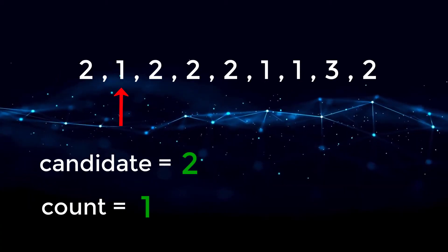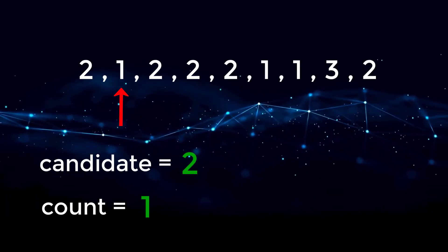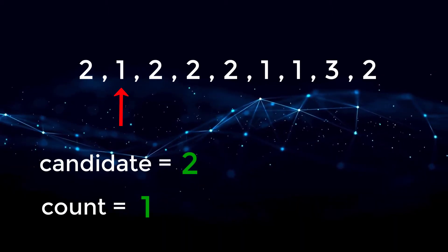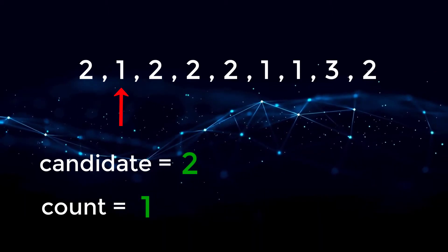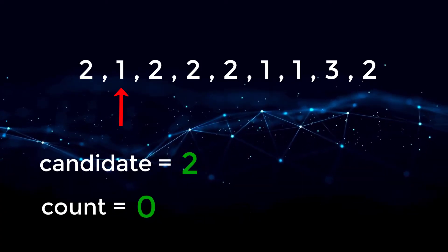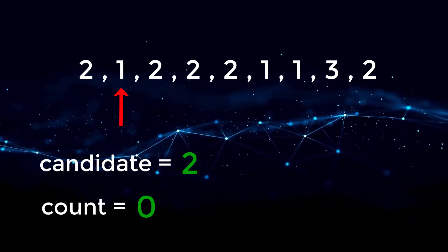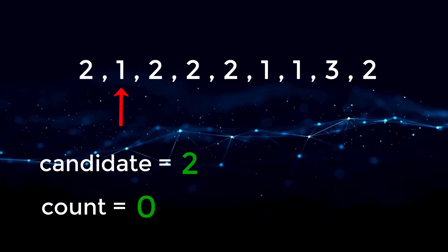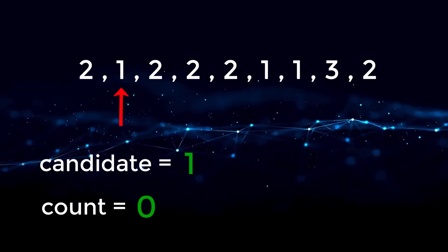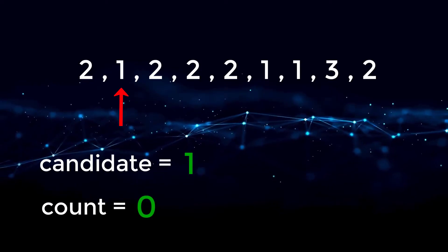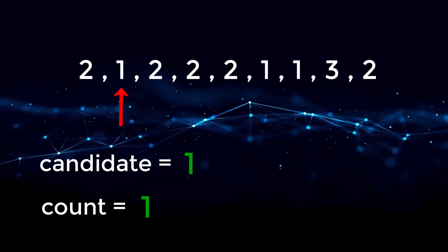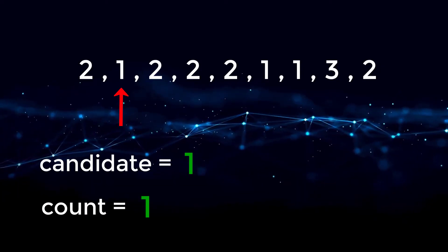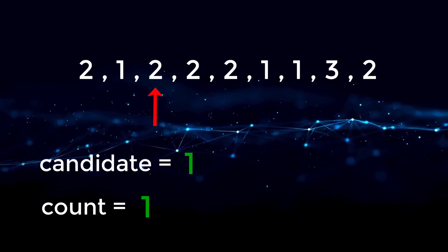We move to the next position and now we are looking at number one. We compare the number we're looking at with our current candidate. If they are different, we decrement our count — so count becomes zero since two is not equal to one. When count is zero, we update our candidate to the current index, and every time we update a new candidate, count must be one. So candidate becomes one and count becomes one. Then we move to number two — one is not equal to two, so we decrement count to zero.